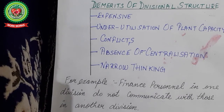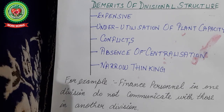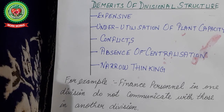Now let us discuss the demerits of divisional structure. First, it is expensive — every division maintains its own facilities and employees, so there is duplication of physical facilities and functions, increasing operating costs. Plant capacity remains underutilized because every product has its own plant installation. There can be conflicts between different divisions due to the use of funds and resources.